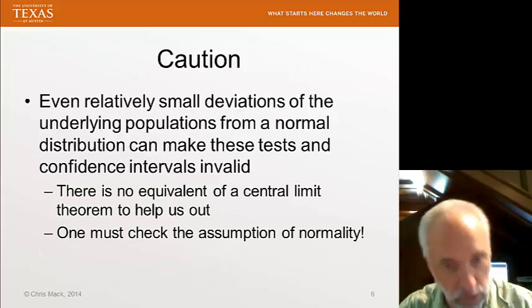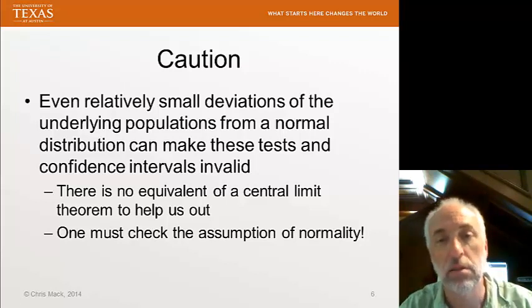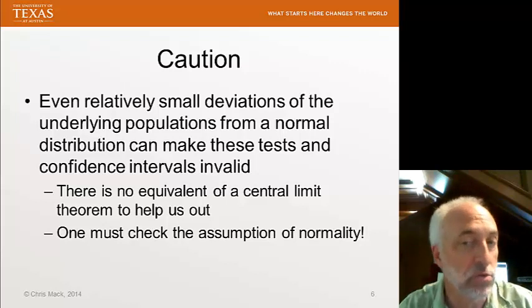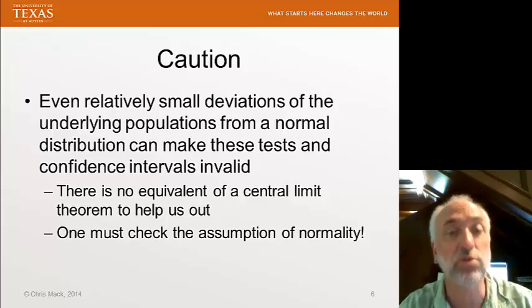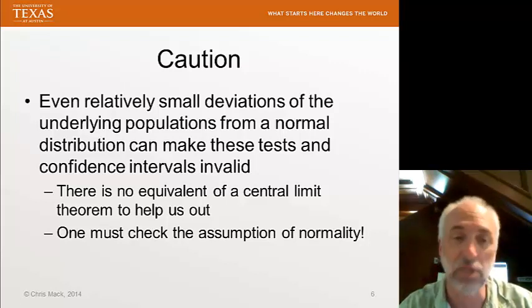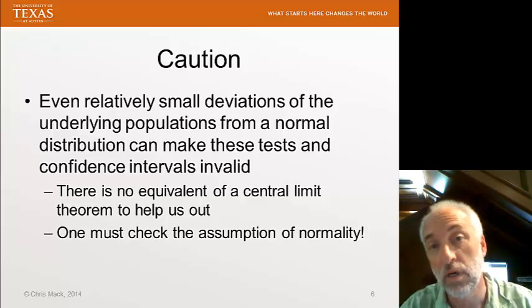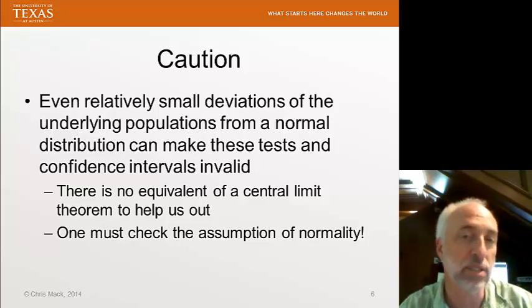A word of caution. You may have noted that in all of these methods of creating a statistical confidence interval around my sample variance, I had to assume that the underlying population had a normal distribution. There's ways of calculating these confidence intervals for other underlying distributions, but I have to know the population distribution to create this confidence interval. There's no equivalent of a central limit theorem that would allow us to assume a certain sampling distribution independent of the population distribution.